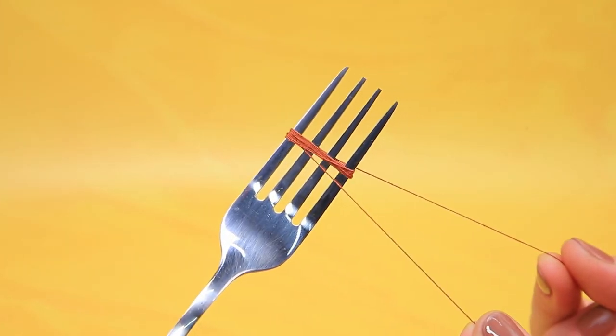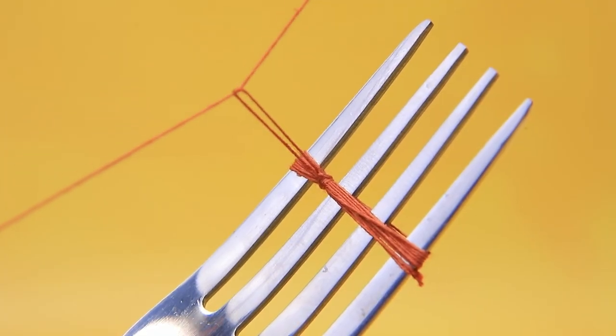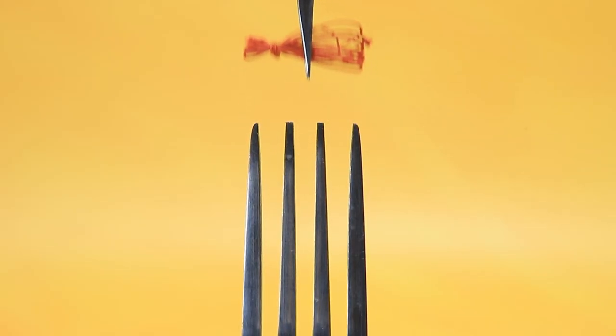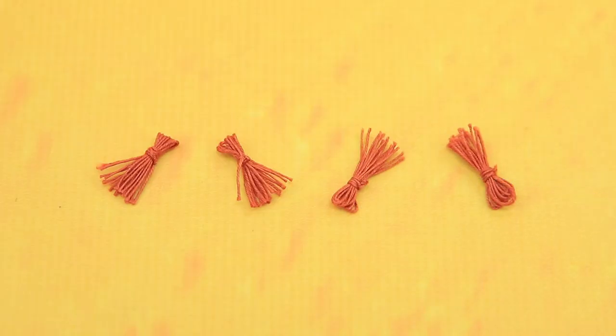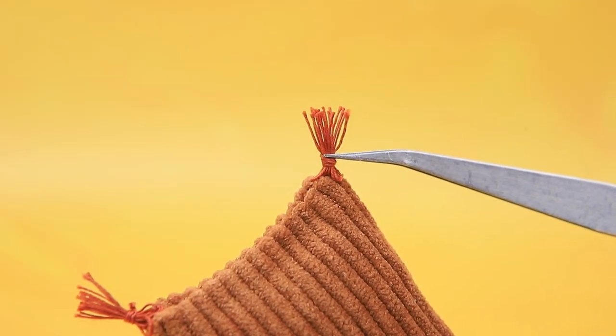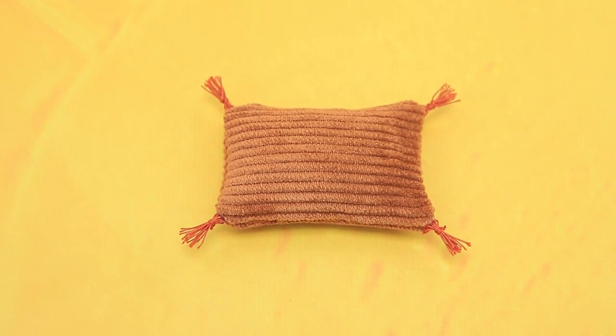Wrap the tines of a fork with a thread. Tie a knot. Cut it. One, two, three, four. Decorate the corners of the pillows with tassels.